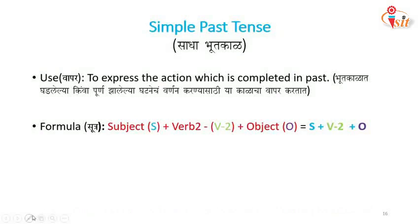Now let's see the formula. The formula is: subject plus verb two — that is the past form of the verb — plus object. In short: S + V2 + O.